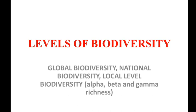The three levels are: global level biodiversity, national level biodiversity, and local level biodiversity. Local level biodiversity and regional level biodiversity are the same. Under these, we will discuss alpha, beta, and gamma richness.